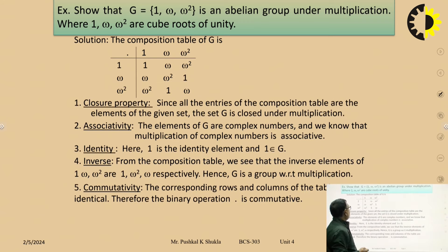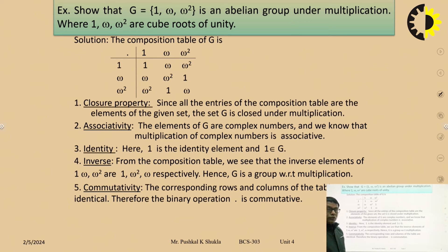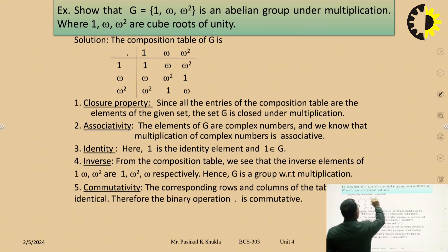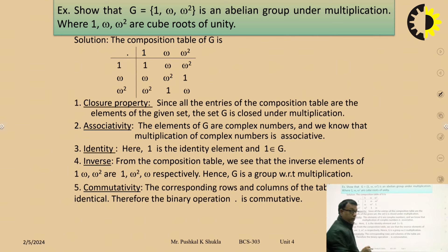This is a very important question which is frequently asked in competitive examinations. Show that G = {1, ω, ω²} is an abelian group under multiplication, where 1, ω, and ω² are the cube roots of unity. This question may also be asked as: show that the set of cube roots of unity is an abelian group under multiplication.